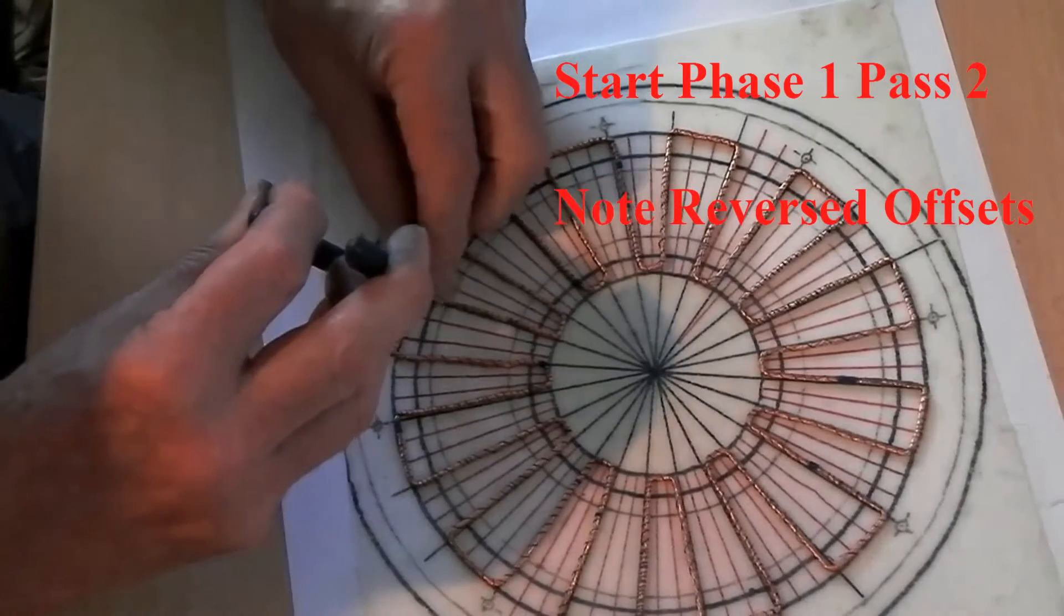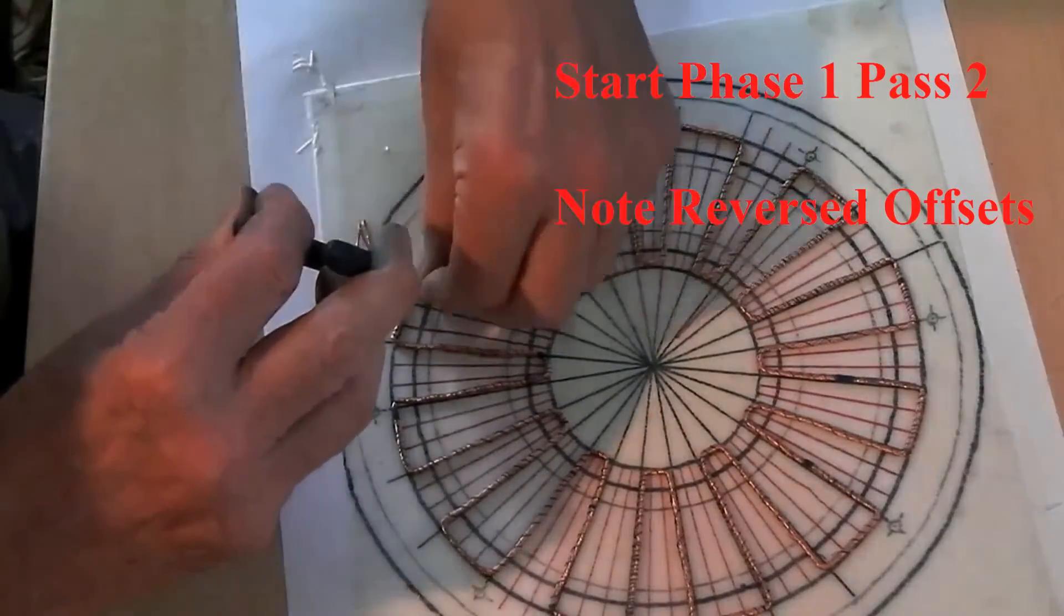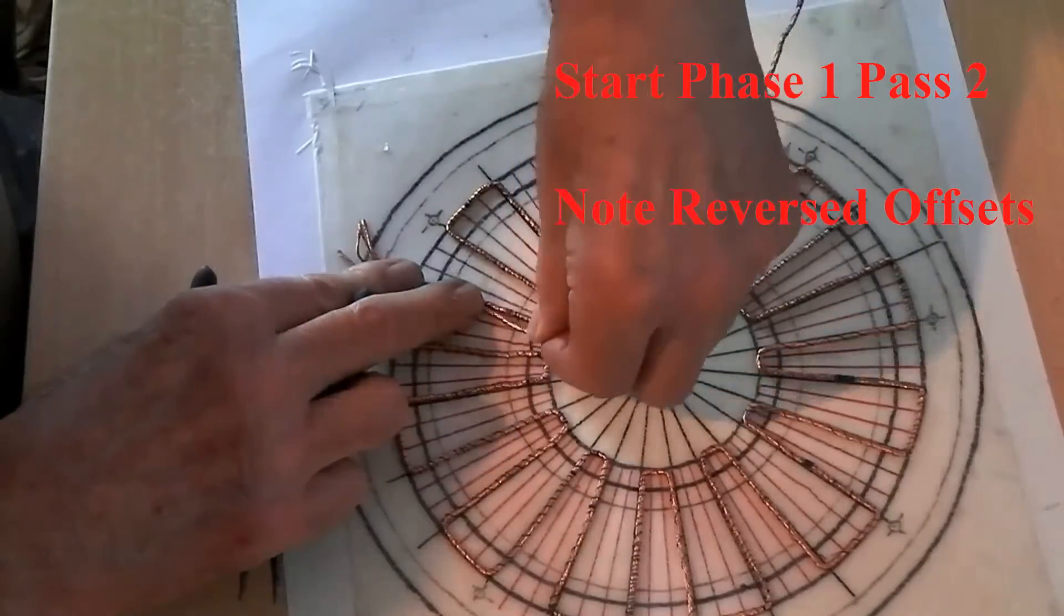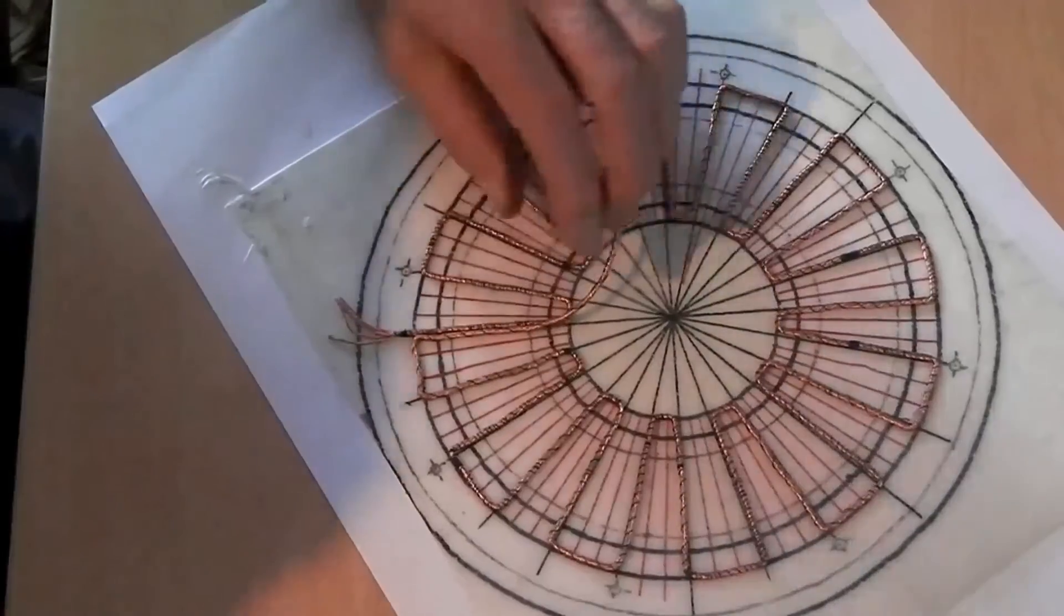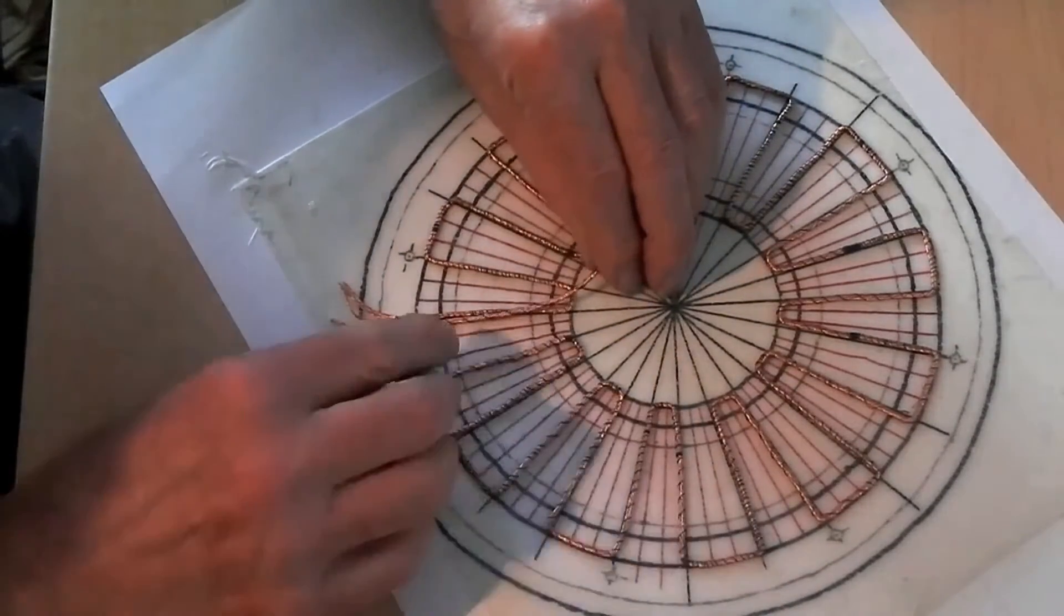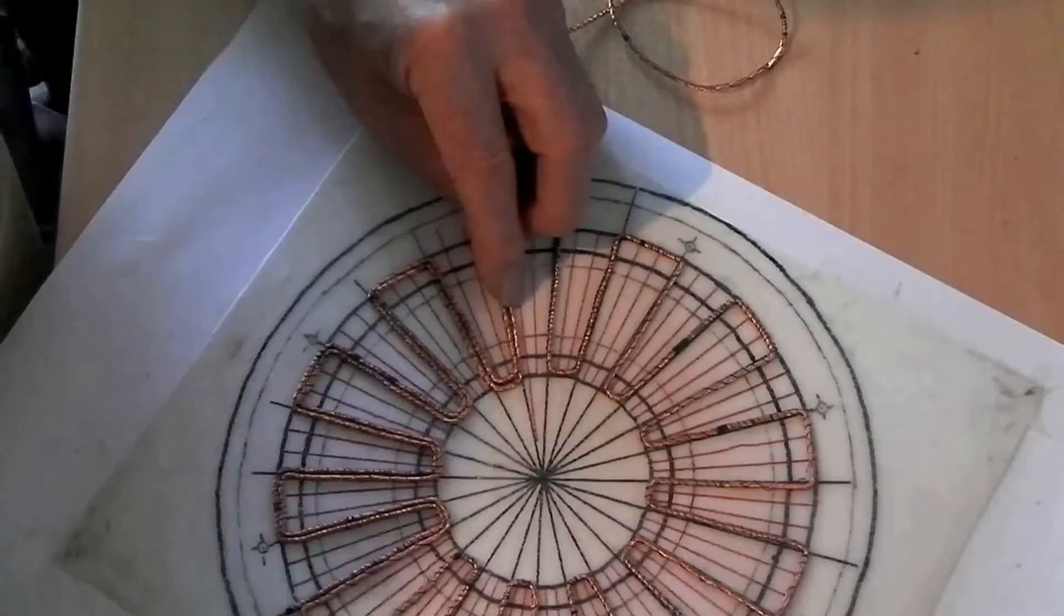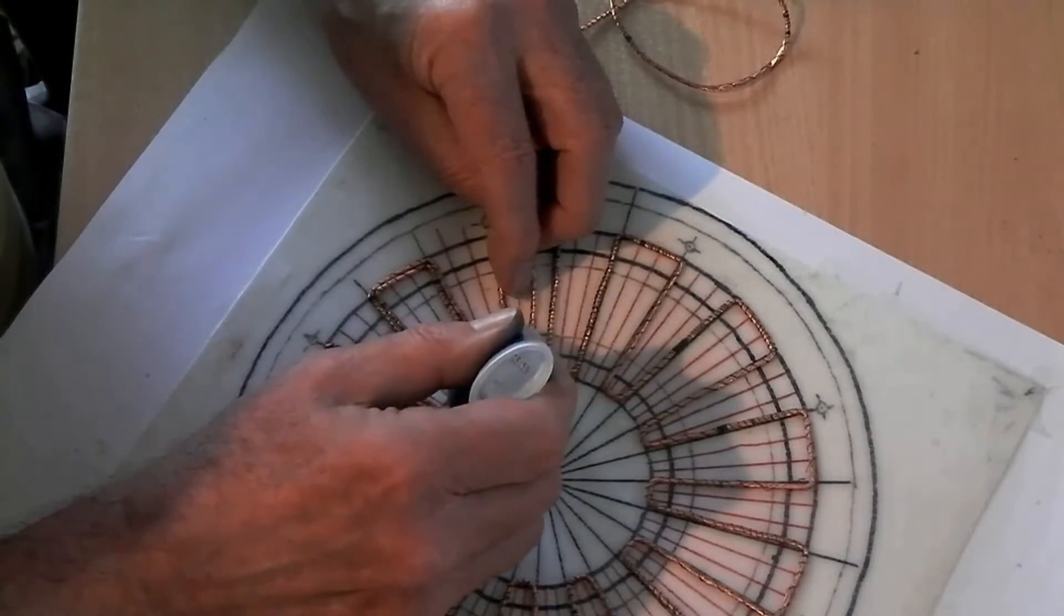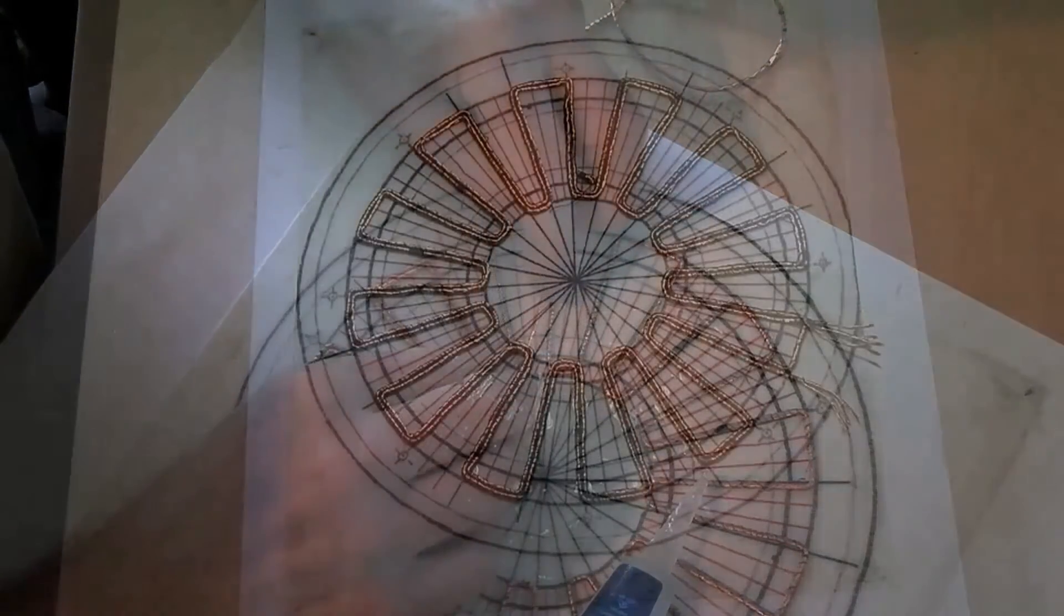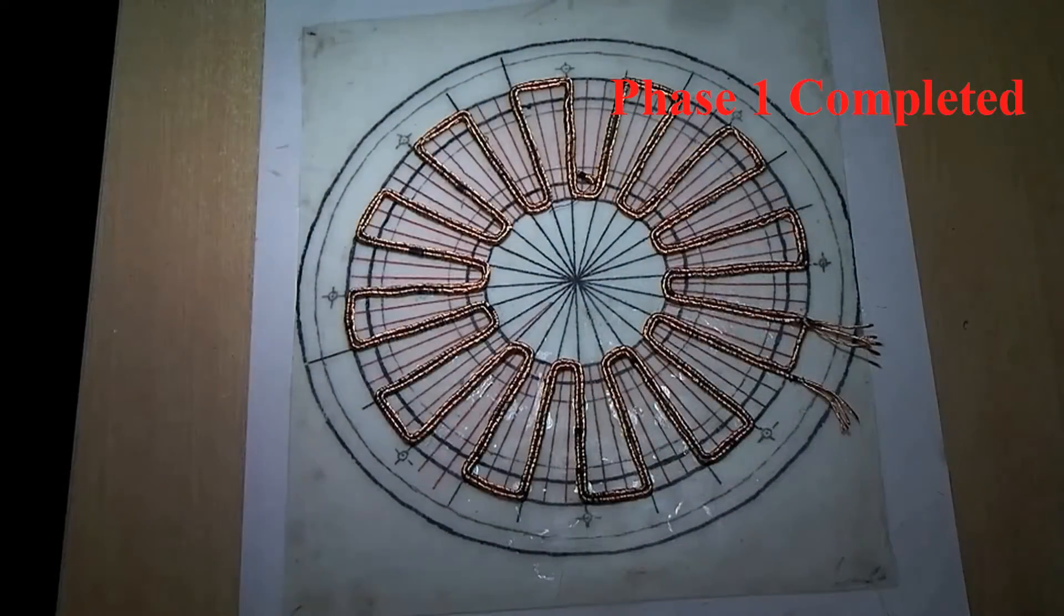The second pass of phase one continues so that resultant pairs of wires straddle the central drawn position. The complete phase lays flat against the fiberglass sheet.